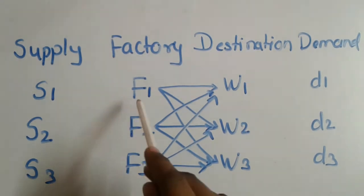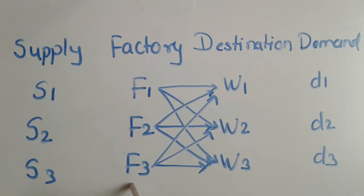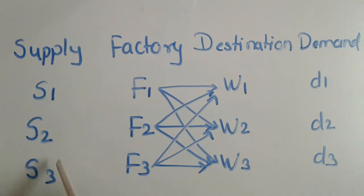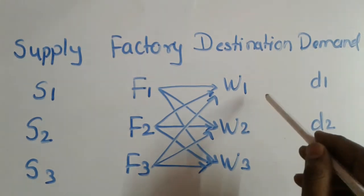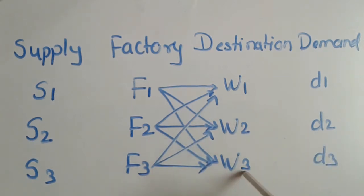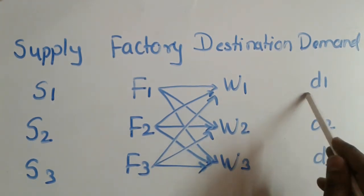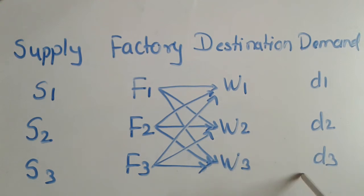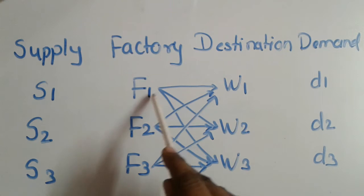Suppose there are three factories F1, F2, and F3 which produce the same products, having the capacity to supply S1, S2, and S3 number of units respectively. From these factories, the products are to be transported to three destinations W1, W2, and W3 having the demands D1, D2, and D3 units respectively. Each factory can transport to each destination.